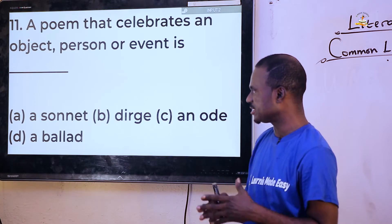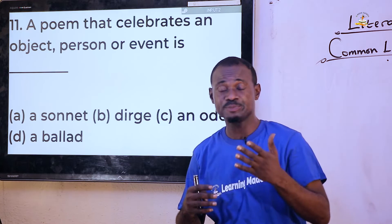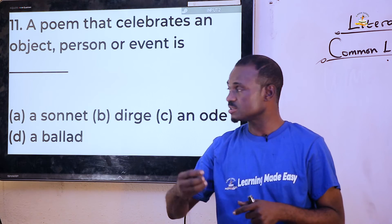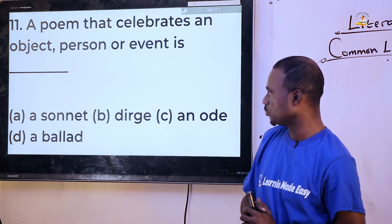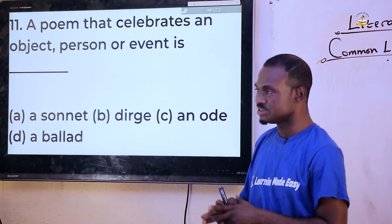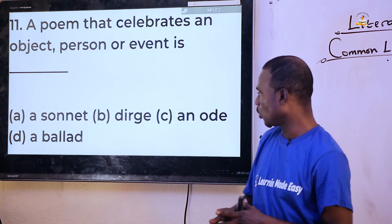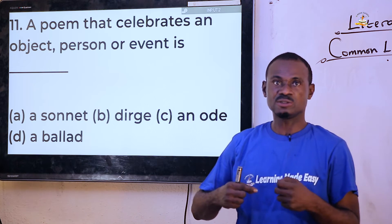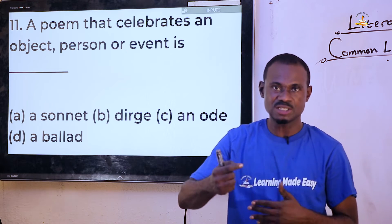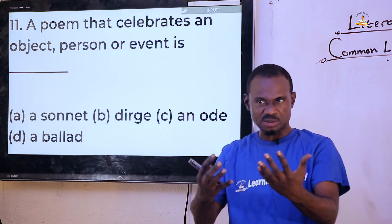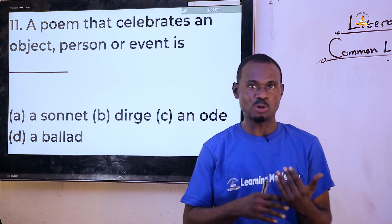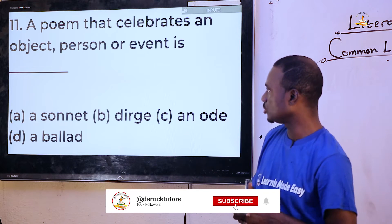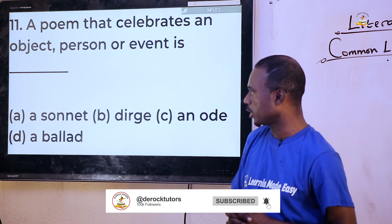Question eleven: 'A poem that celebrates an object, person, or event is dash.' If a poem is written to appreciate an object or a person, we can't go for ballad, not dirge, not sonnet. The answer is ode. An ode is an address to a particular person or object just to celebrate it. A similar type of poem to the ode is called a lyric.